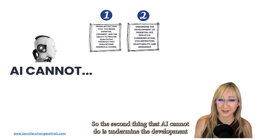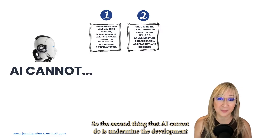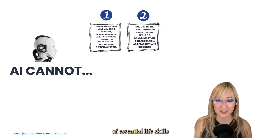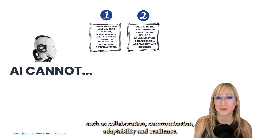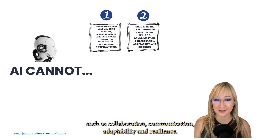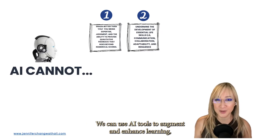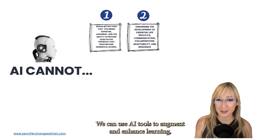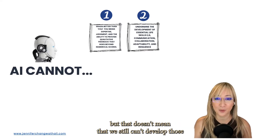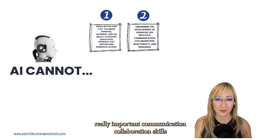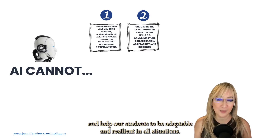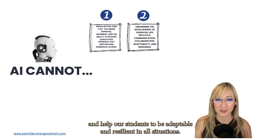The second thing that AI cannot do is undermine the development of essential life skills such as collaboration, communication, adaptability, and resilience. We can use AI tools to augment and enhance learning, but that doesn't mean that we can't develop those really important communication and collaboration skills and help our students to be adaptable and resilient in all situations.